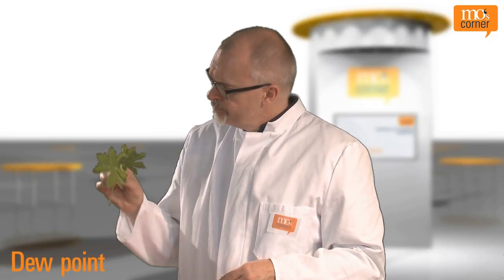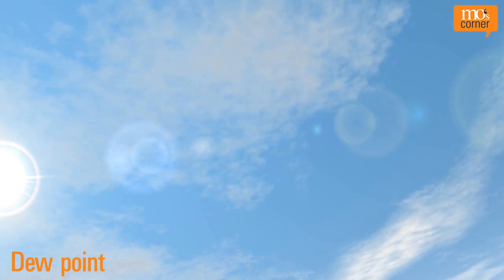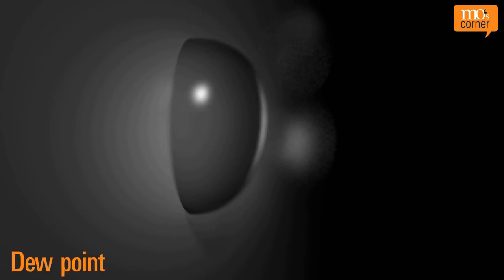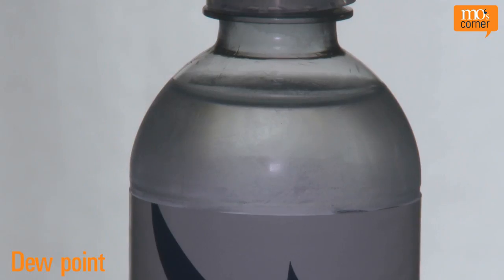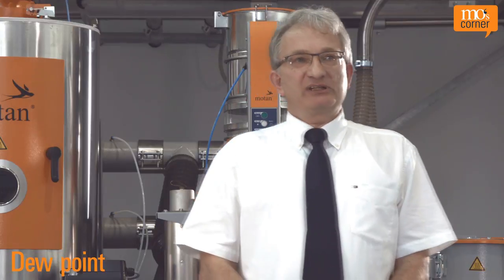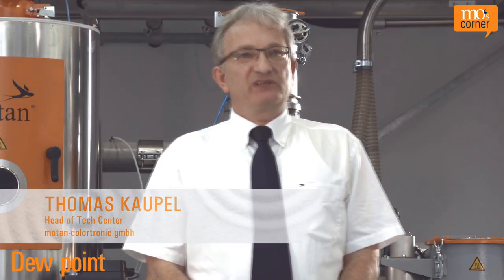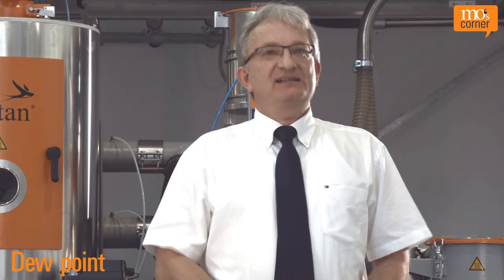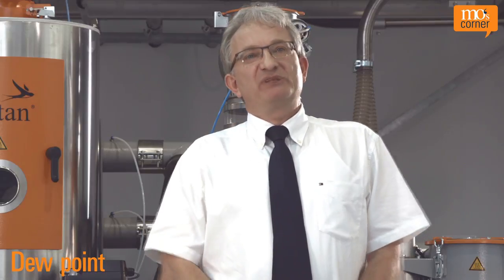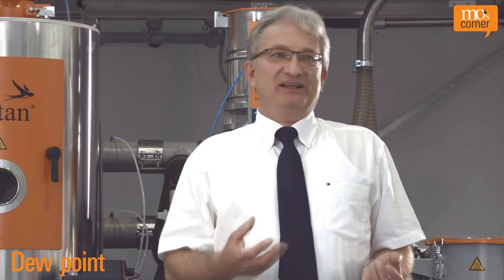The dew point defines how dry the air is. A value of 100% relative humidity means that the air is saturated with moisture and cannot absorb any more moisture at the current temperature. If the air is then cooled below the dew point, the moisture in the air condensates. Drying means that water must be removed from the granules, but one has to give the water an impulse for it to leave the granules. The affinity of the air towards the water is tied to the dew point — the lower the dew point, the more energy is present in the air to remove the water from the granules.